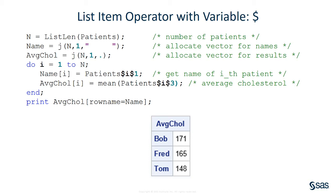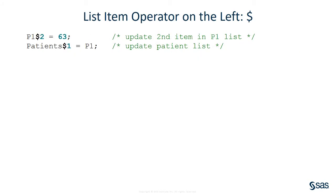You can also specify a variable that contains a number. This slide shows a loop that iterates over items in the patients list. During each iteration, the name of the ith patient and the cholesterol values for the ith patient are extracted. The loop computes the average cholesterol value for each patient in the list. You can also use the list item operator on the left side of an assignment statement. If Bob's age is not really 36 but is actually 63, you can assign that value into the second item of Bob's list. Similarly, you can update items in a list of lists.